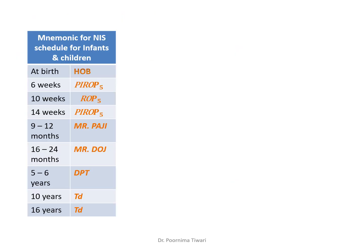The final mnemonic summary: At birth — HOB (Happy On Birth); 6 weeks — Period of 5; 10 weeks — ROB 5; 14 weeks — Period of 5; 9 to 12 months — Mr. PAJI; 16 to 24 months — Mr. DODGE; 5 to 6 years — DPT; 10 years — TD; 16 years — TD.